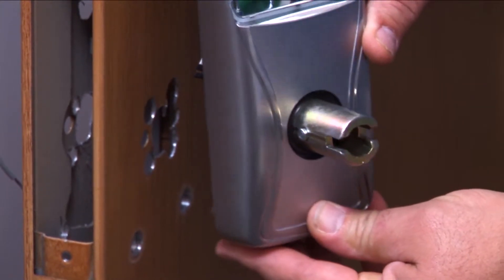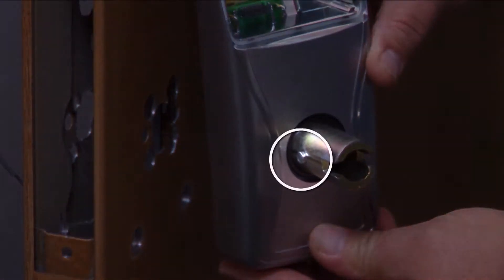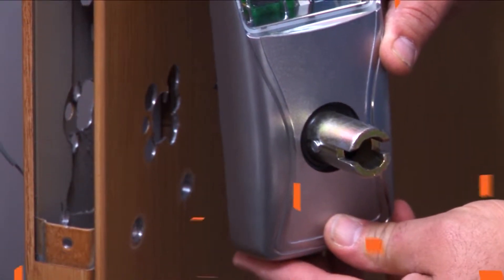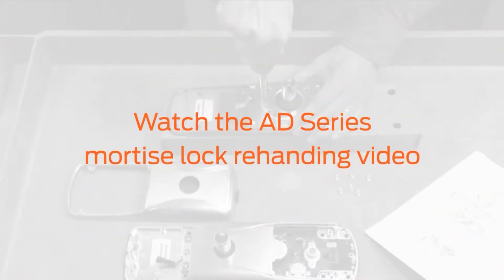Check the handing of the outside and inside assemblies. The knob stop pin should be pointing towards the latch edge of the door. If those assemblies are not handed for your opening, re-hand them now. Watch the AD series mortise re-handing video to learn how.